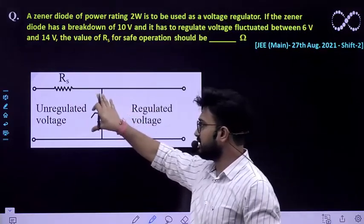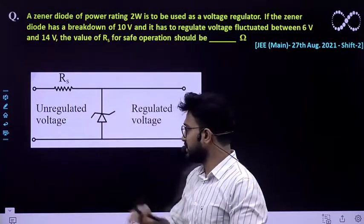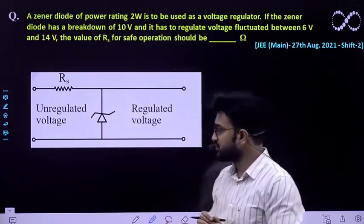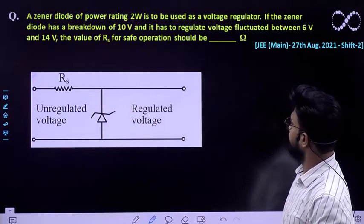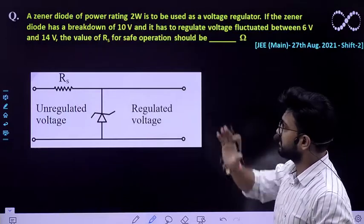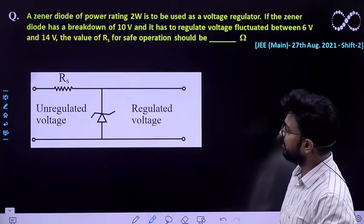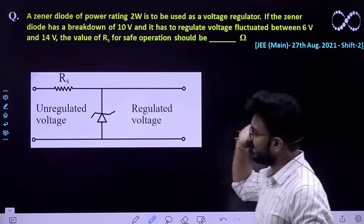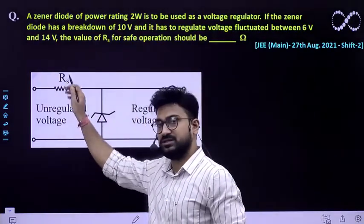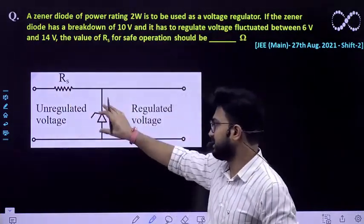So irrespective of whatever may be the value of unregulated voltage, the Zener diode will eventually give a voltage of 10 volt. And fluctuation between 6 and 14, and the value of resistance that is Rs for the safe operation should be - so you need to find out this value of Rs, this resistance, so that it can safely operate.